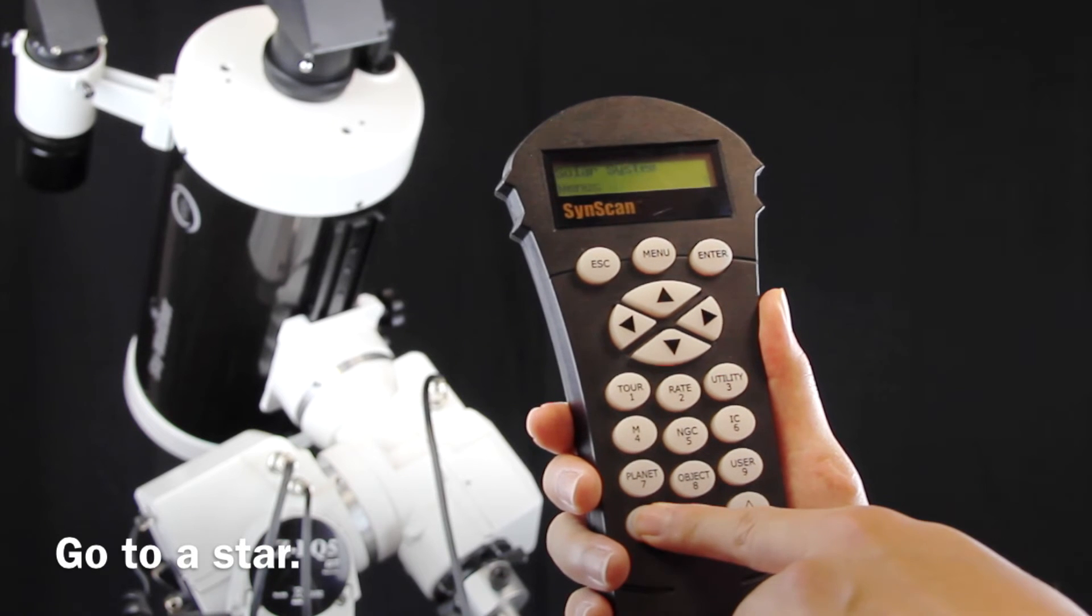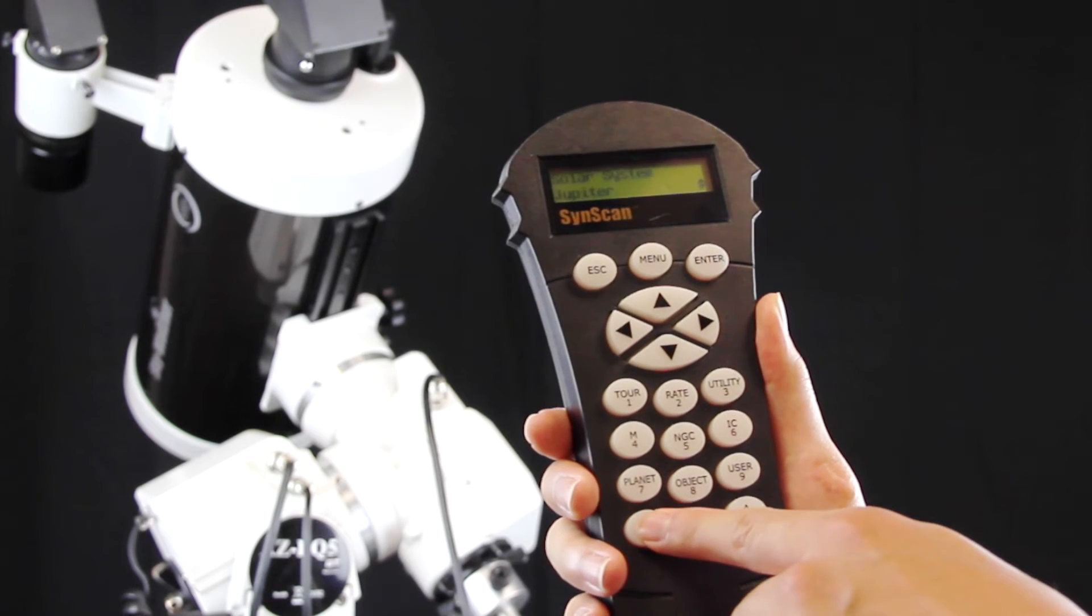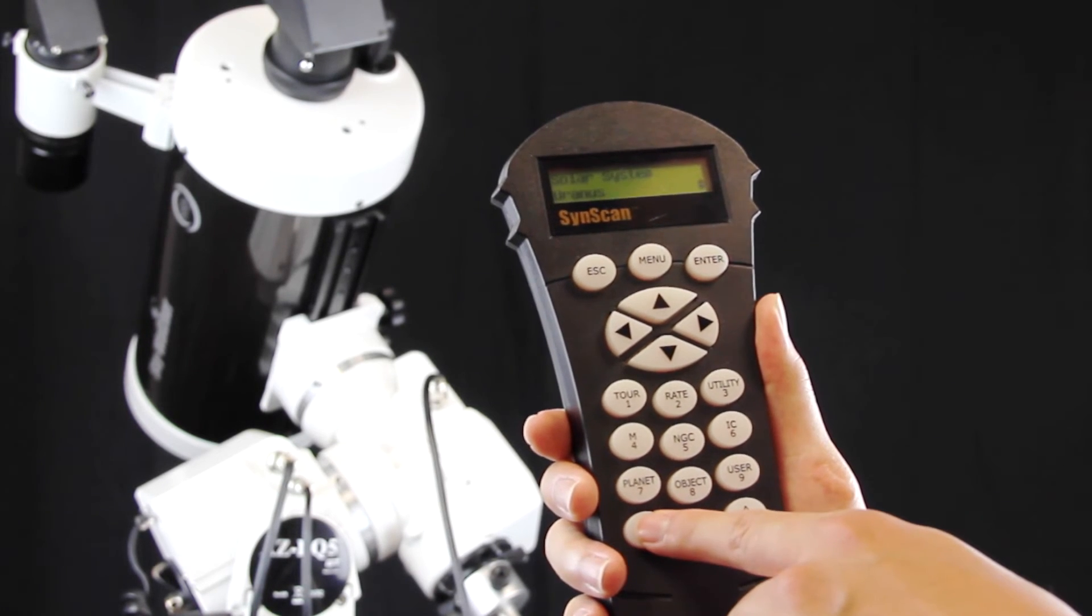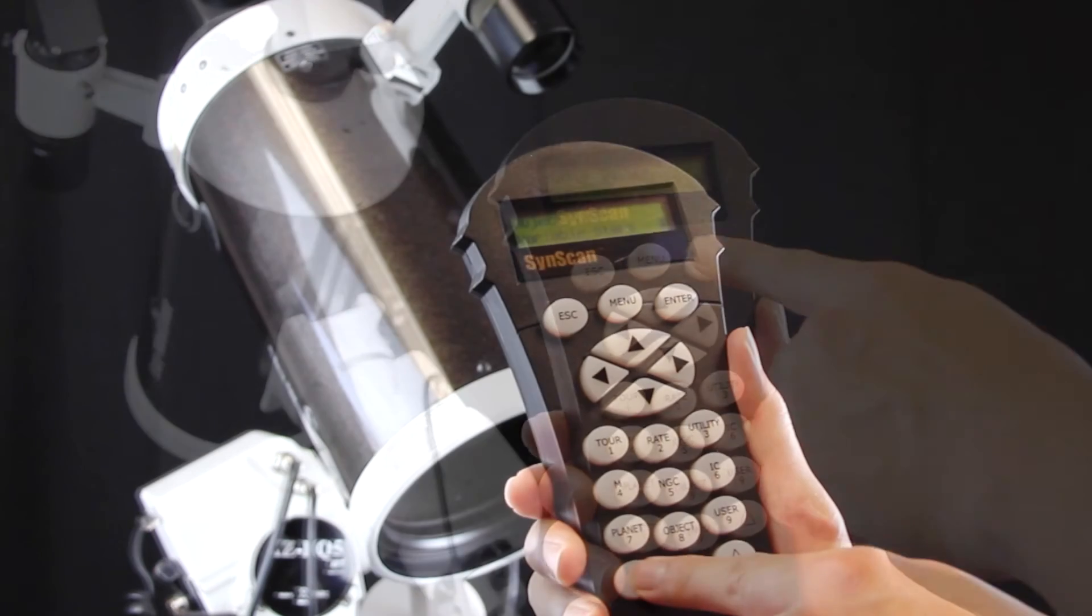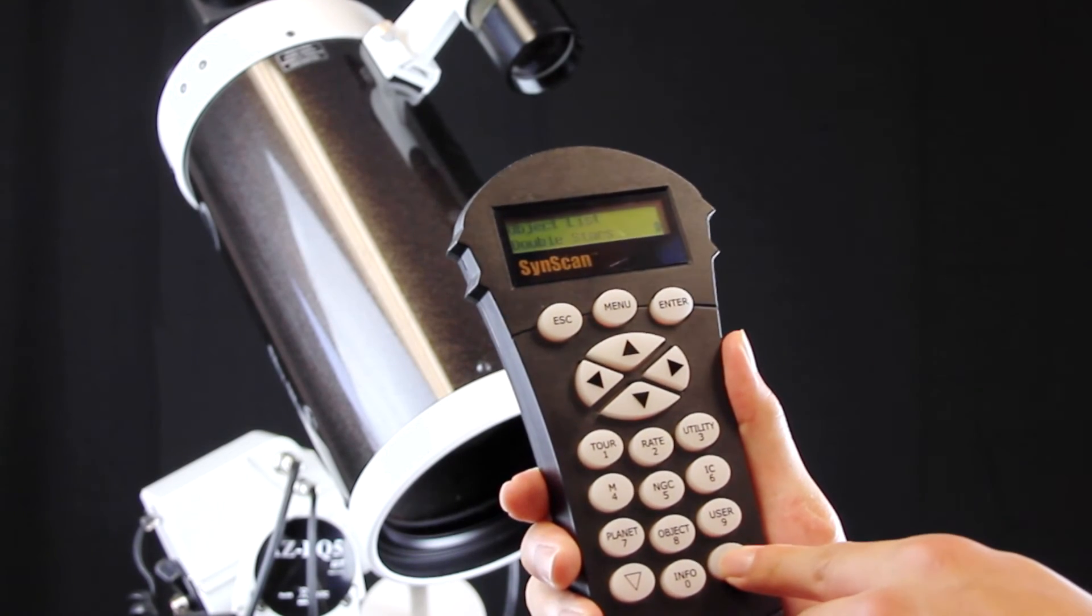You may now point to any objects in the catalog. It could be a planet within the solar system, a variable star, or some deep sky objects such as Messier or NGC objects.